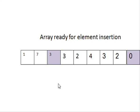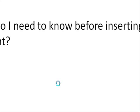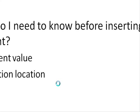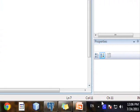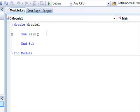Before writing the program, a few notes on what you need to know before inserting an element. First, you obviously need to know the element value — in our example we are going to insert nine. Next, you need to know the insertion location — was it the third or fourth location? Finally, you need to know the size of the array, because you want to shift elements starting from the end of your array down to the location of insertion.